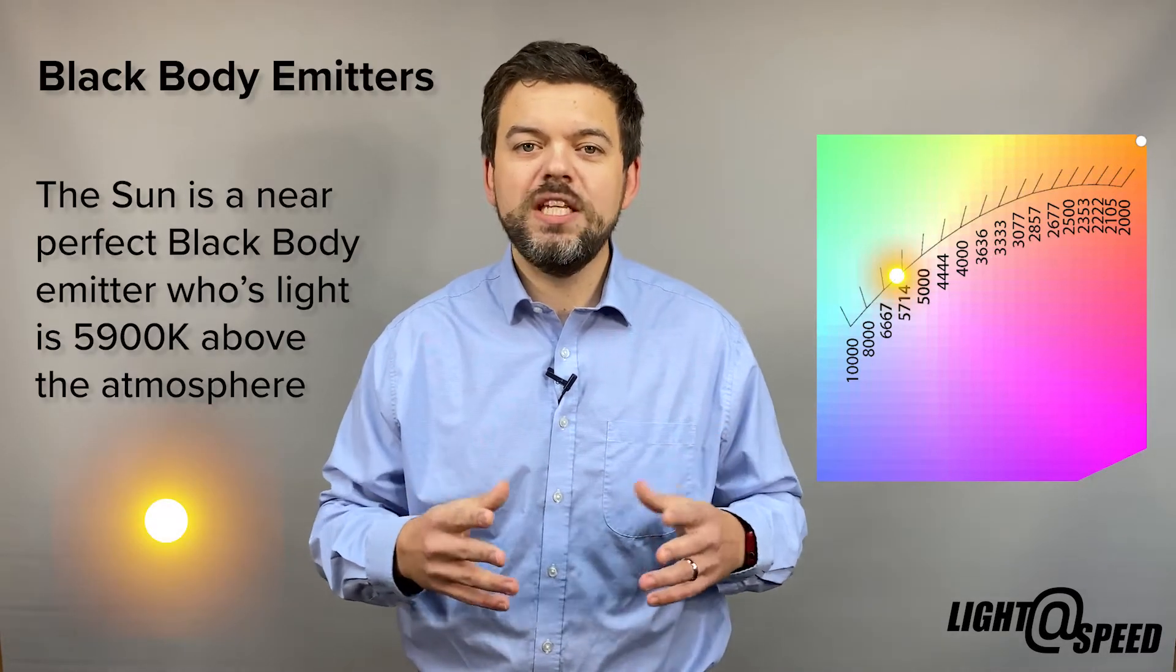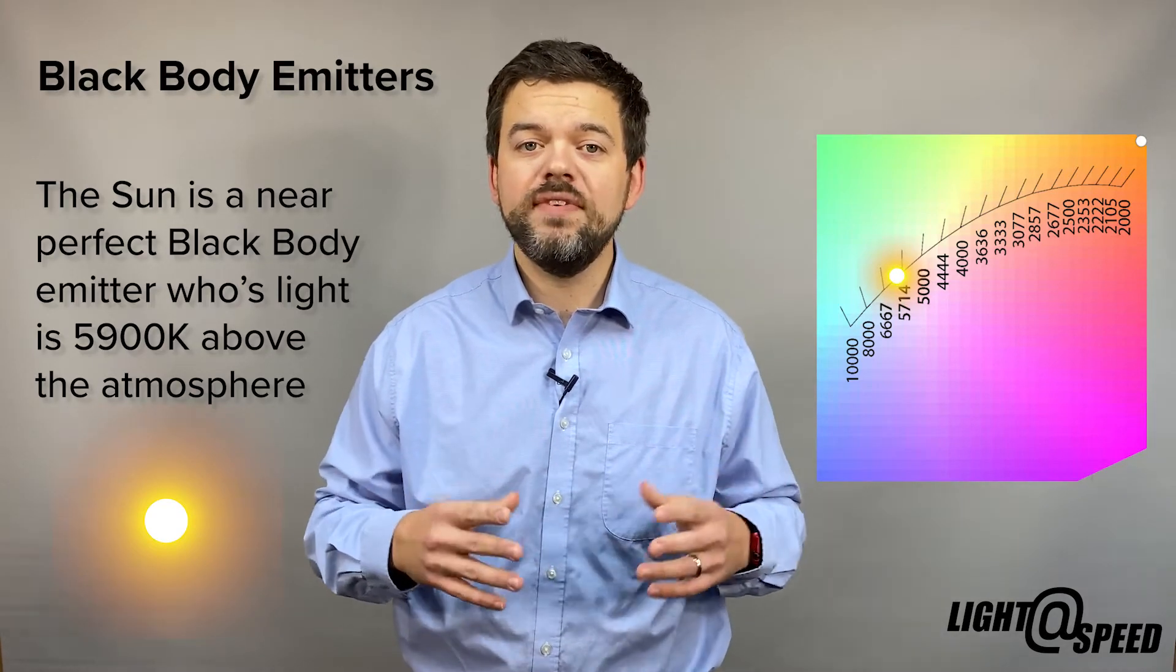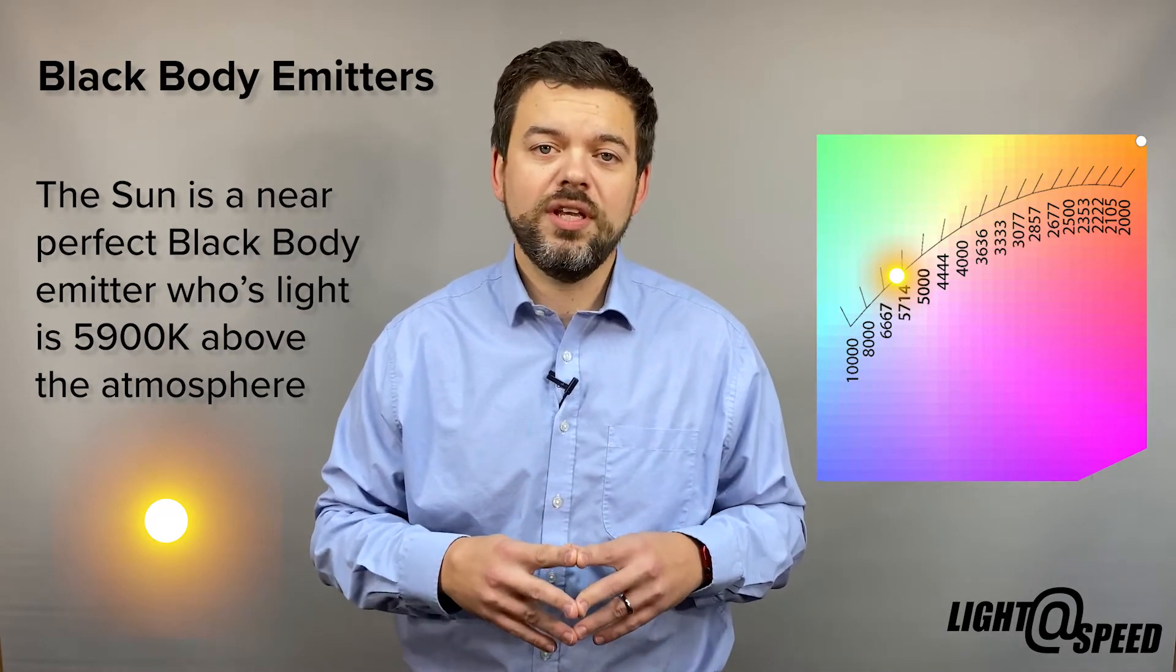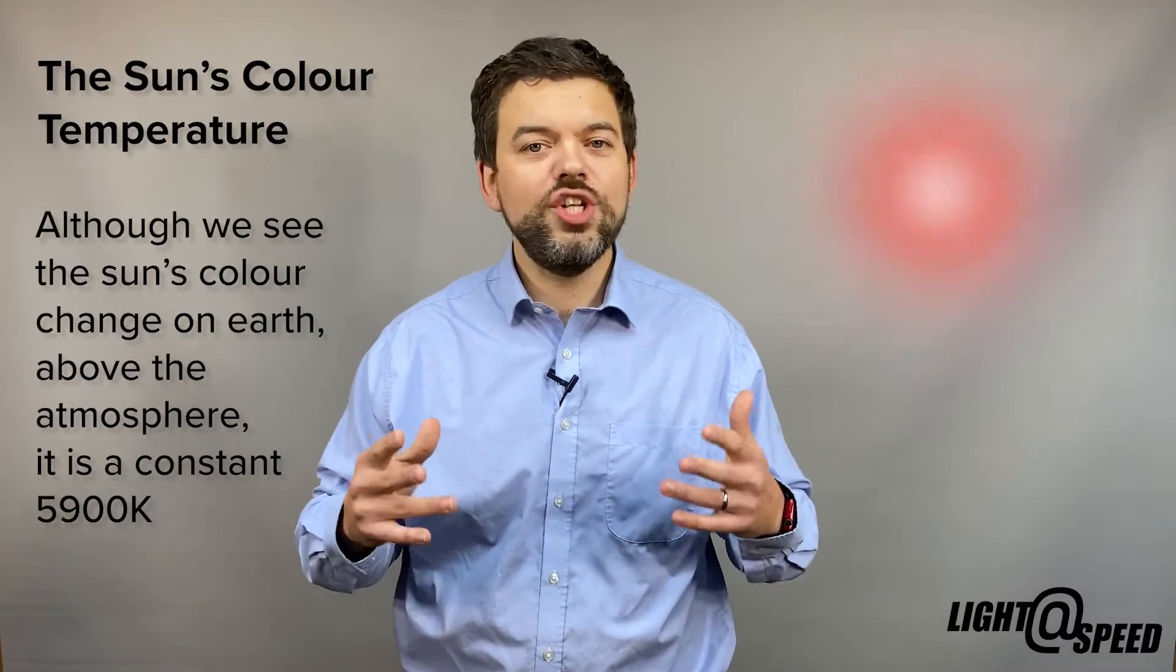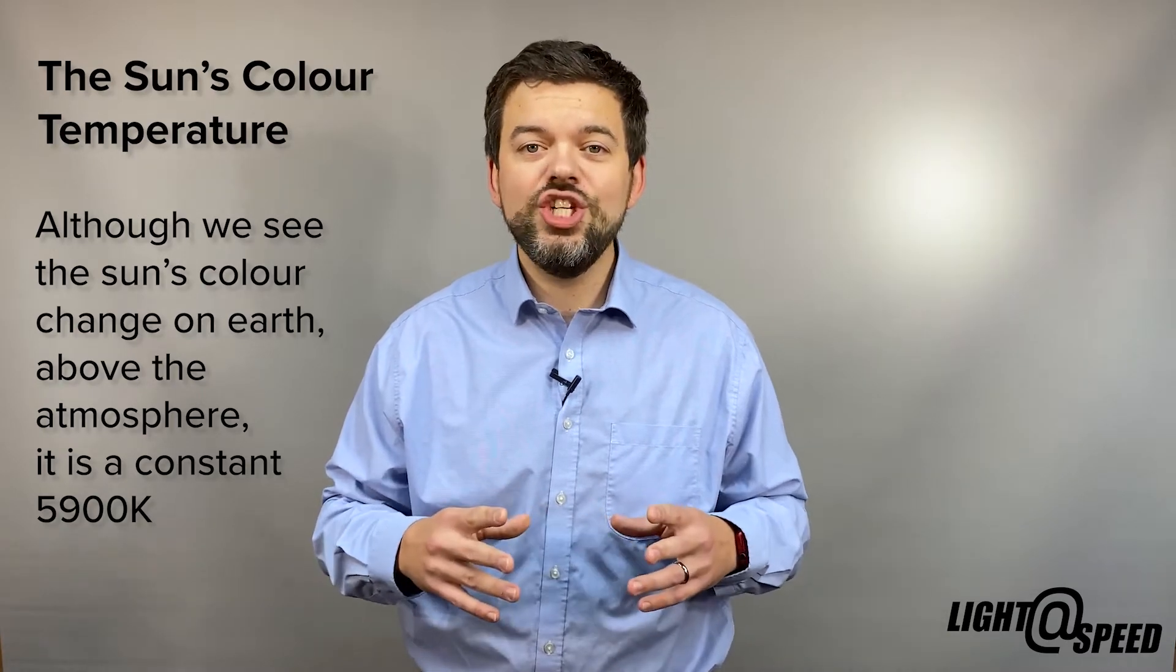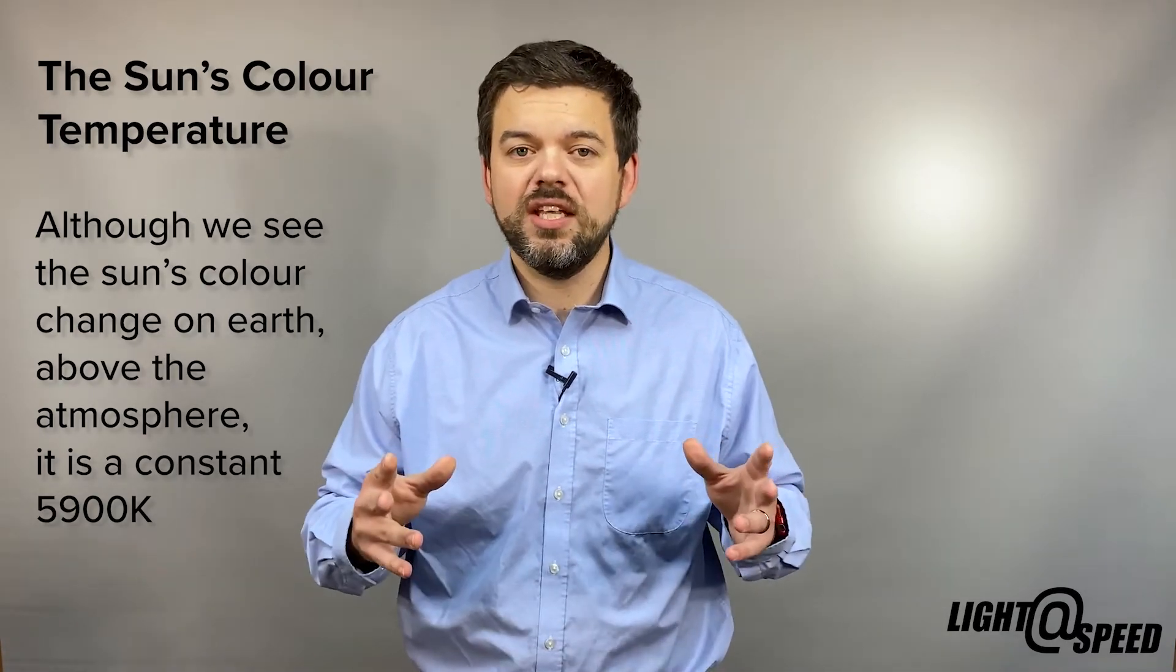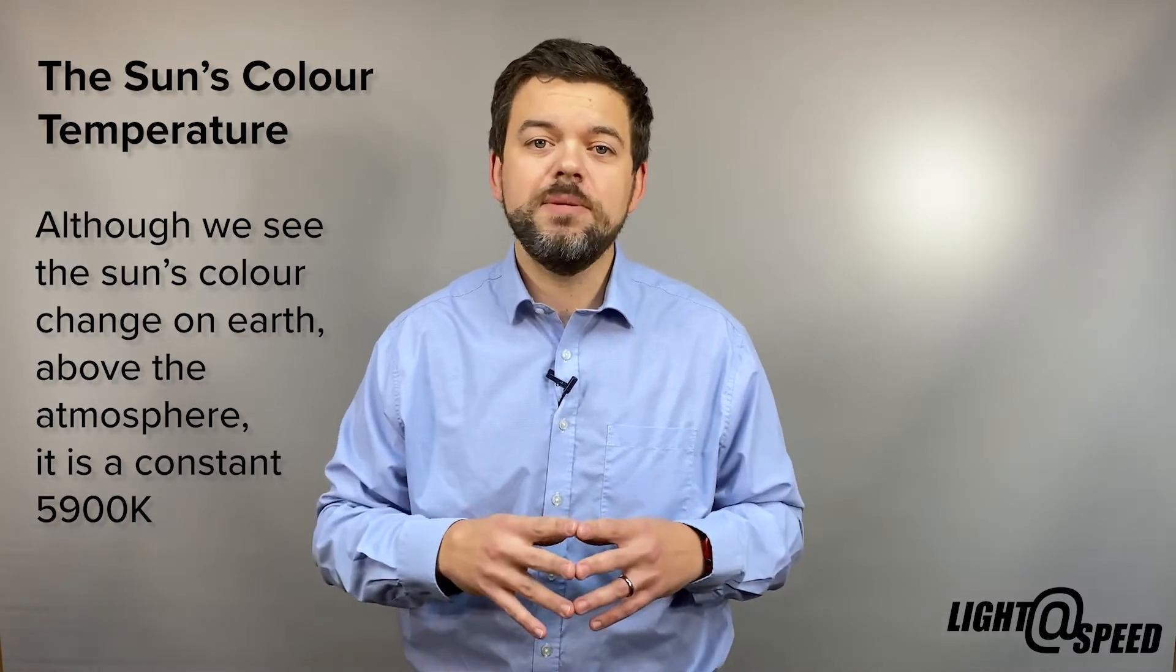The sun is actually a great black body emitter, and the colour temperature of sunlight above the atmosphere is 5900 Kelvin. The sun may appear red, orange, yellow, or white from earth depending on its position in the sky, but the change in colour of the sun over the course of the day is a result of scattering of the sunlight, and not due to changes in its black body radiation.